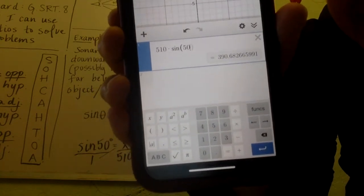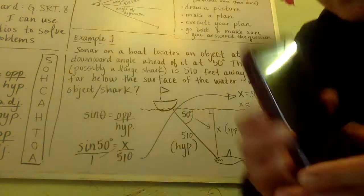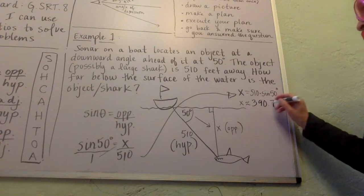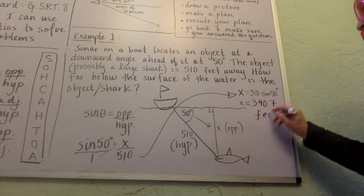You don't have to do anything else. It will tell you that the answer is 390.7, roughly, if we round to one decimal. So x is 390.7 feet away.